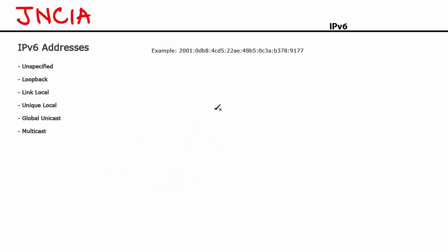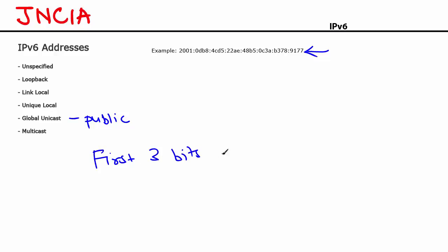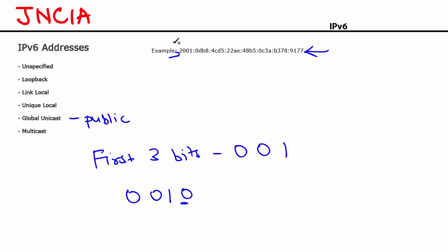Global unicast addresses are publicly routable addresses, which means you can use them on the internet. The first 3 bits of a global unicast address have to be 001. Since every character is represented by 4 binary bits, the first 3 bits are set to 001 and the 4th can be 0 or 1. If you put a 0, the first character is 2; if you put a 1, the first character is 3.